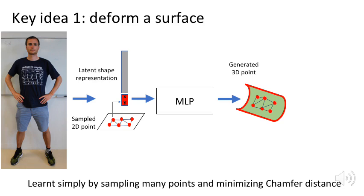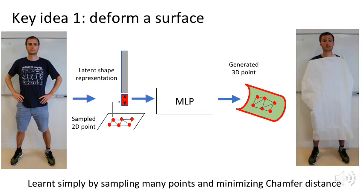Interestingly, at inference time, by sampling the 2D patch more or less densely, we can generate as many points as we want. However, with this approach, reconstructing objects with complex topologies such as me in this position is hard with a single deformed patch.